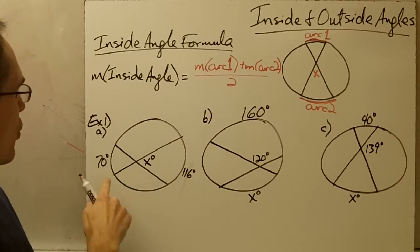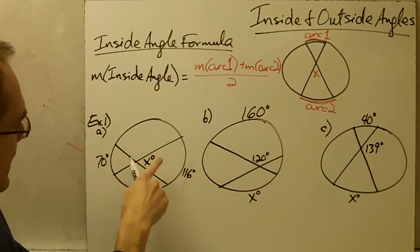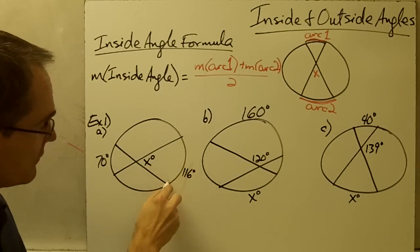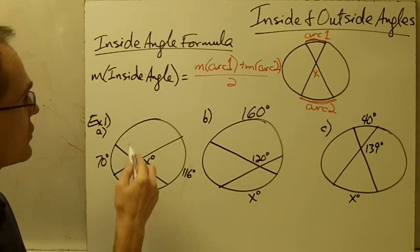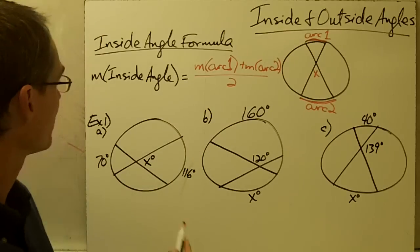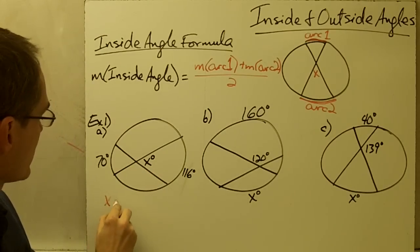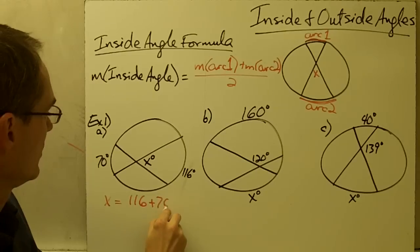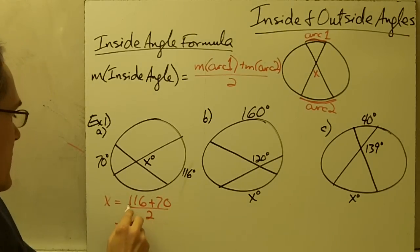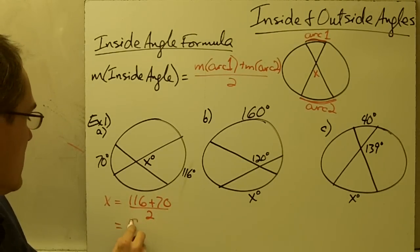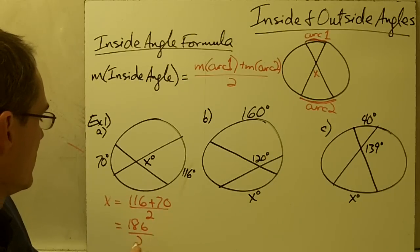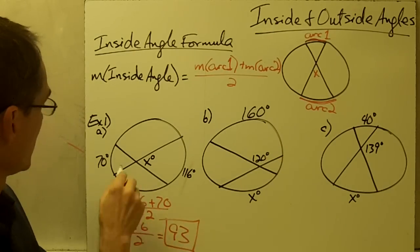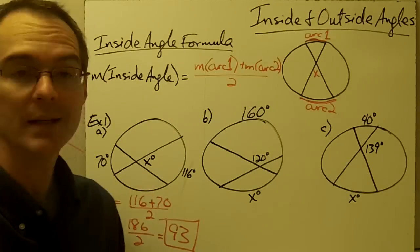Let's take a look at example 1a. I've got an inside angle x, and I've got the measure of this arc and the measure of this arc given to me, so I just need to plug them into my formula. The measure of angle x is equal to 116 plus 70 divided by 2, so that's 186 divided by 2, which is 93 degrees.